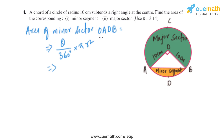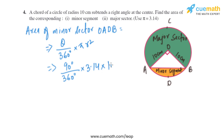Let's find the area of the minor sector OADB. Using the formula theta divided by 360 multiplied by pi r squared, and since the minor sector subtends 90 degrees, it becomes 90 divided by 360, multiplied by 3.14 and 10 squared.